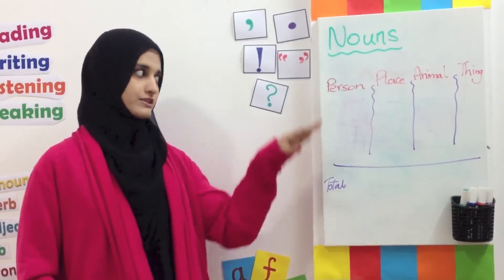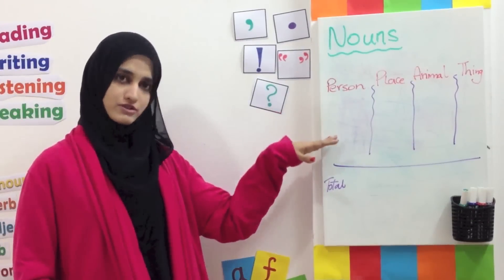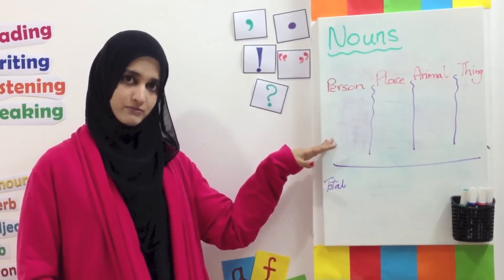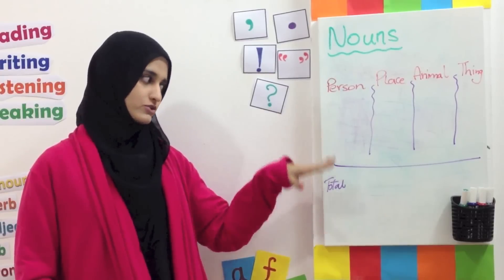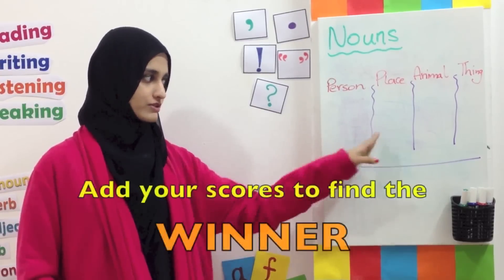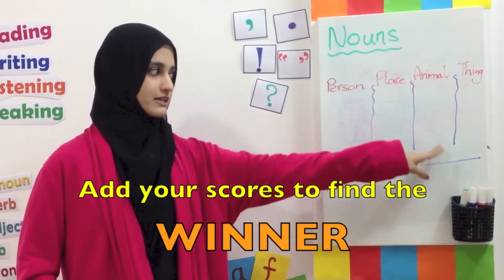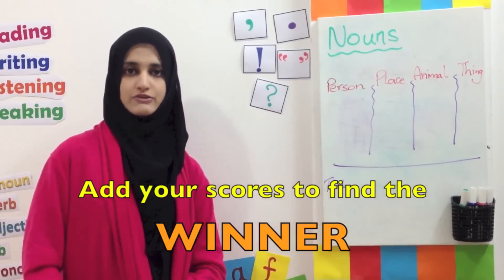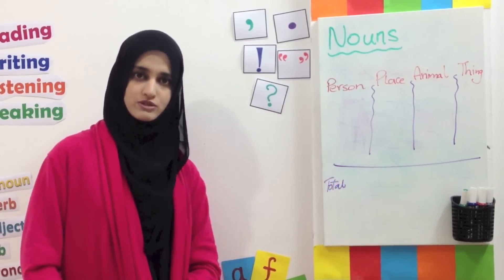When you have taken lots of turns and you want to finish the game, you are going to do the totals for each of the columns and add up your scores, and you are going to find out who is the winner.